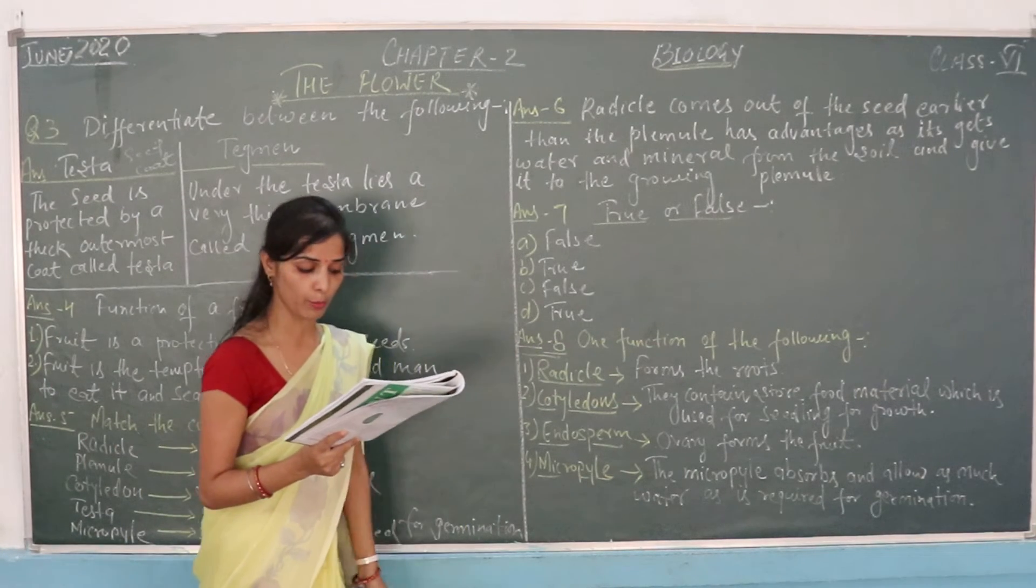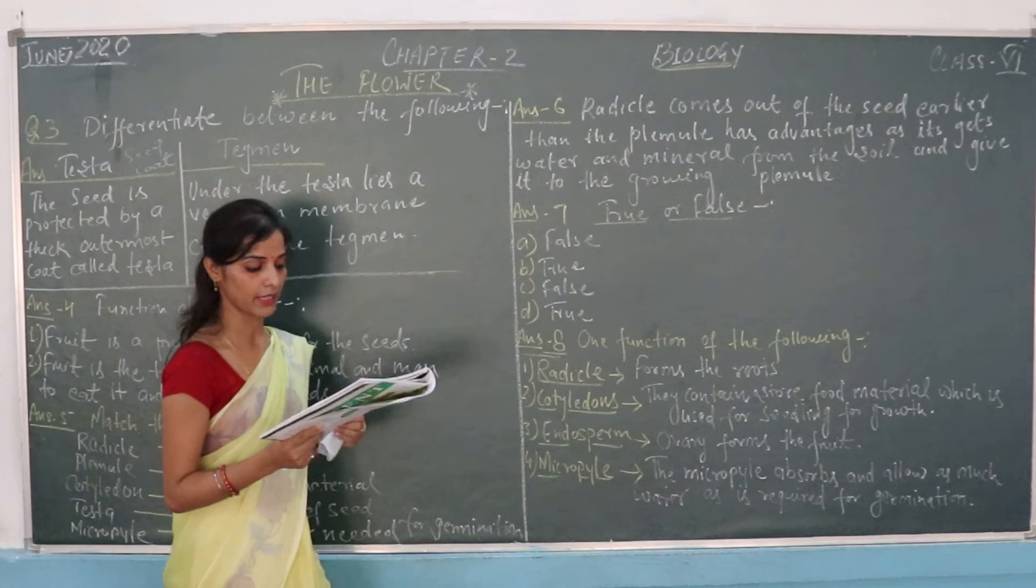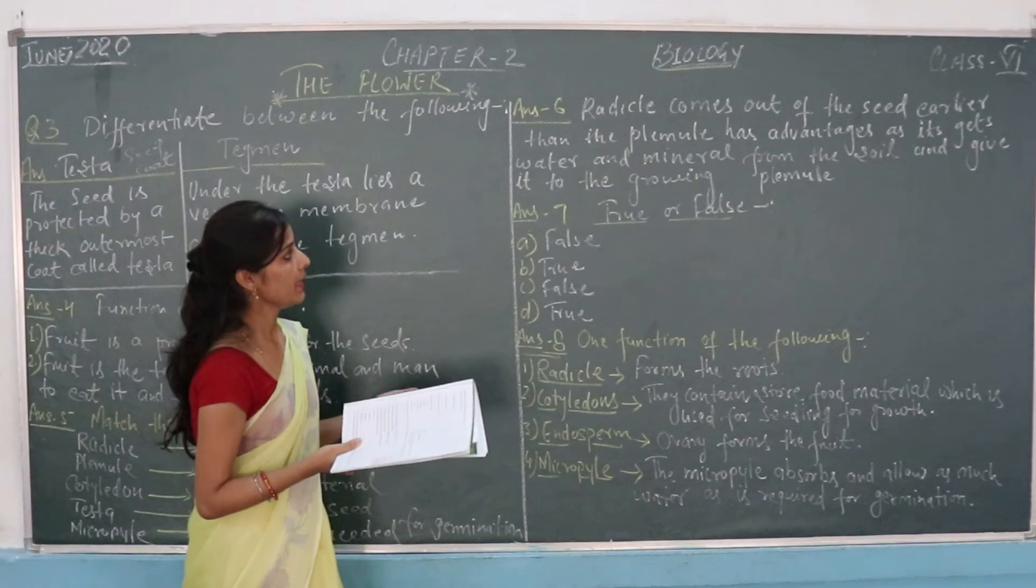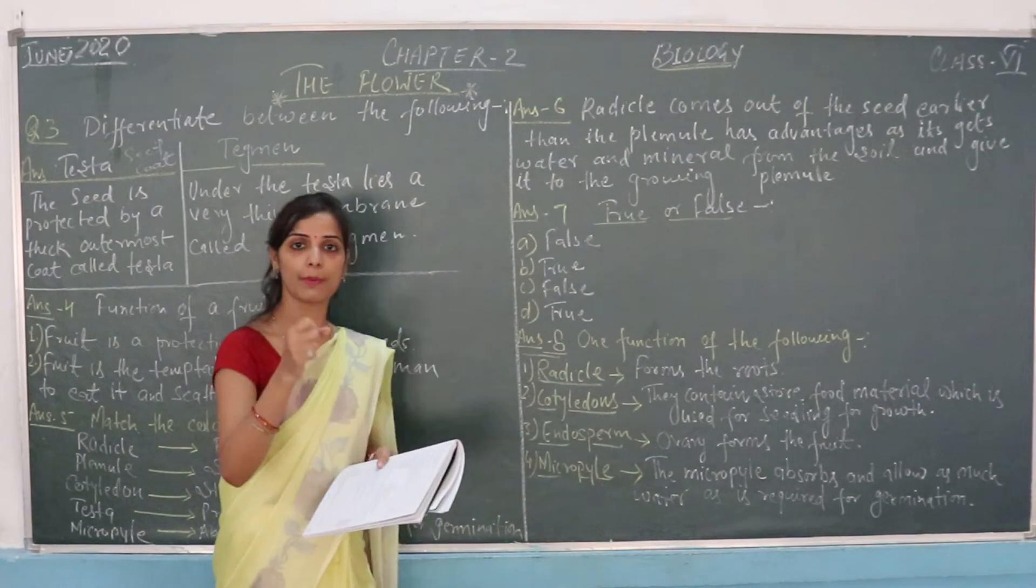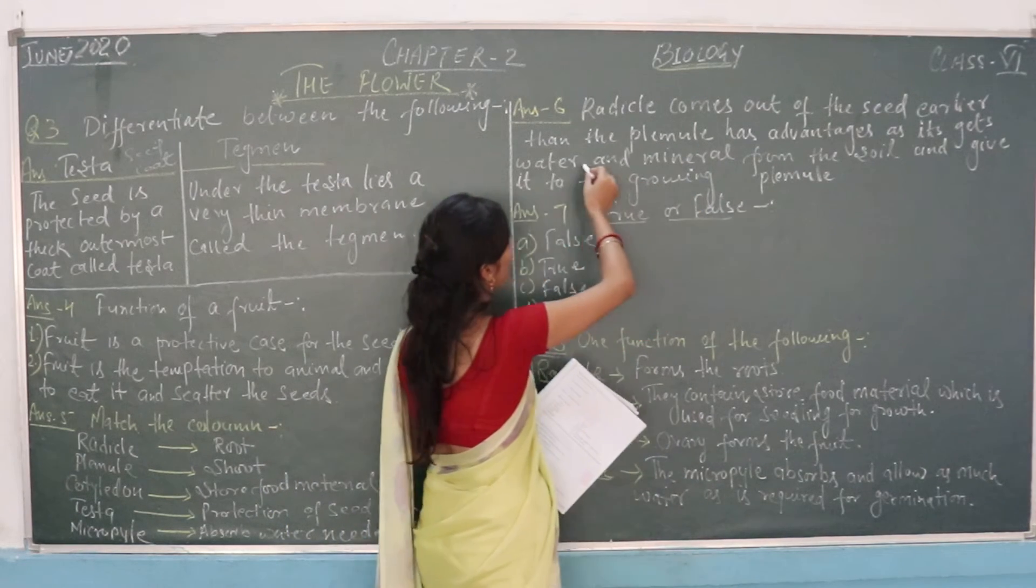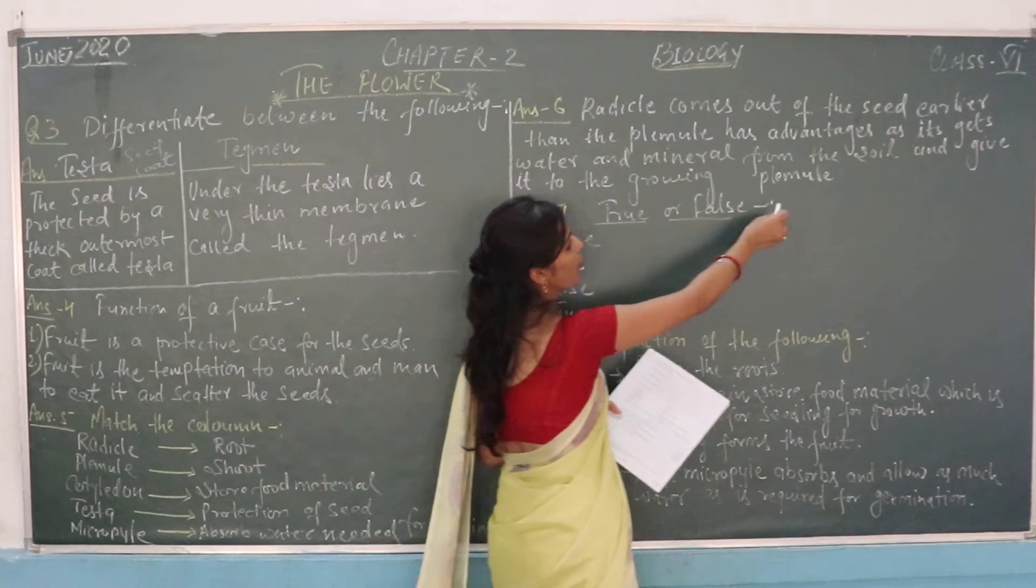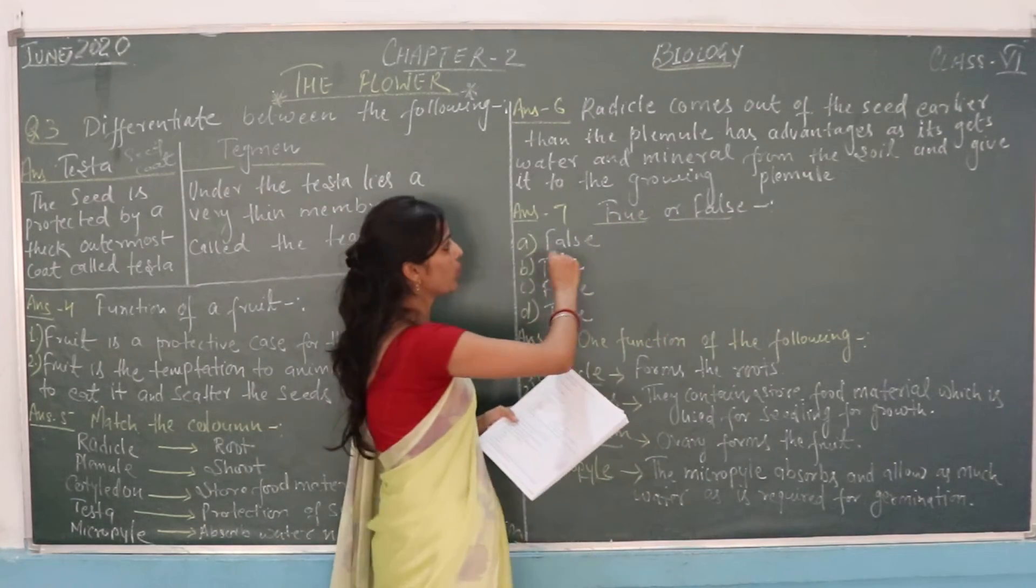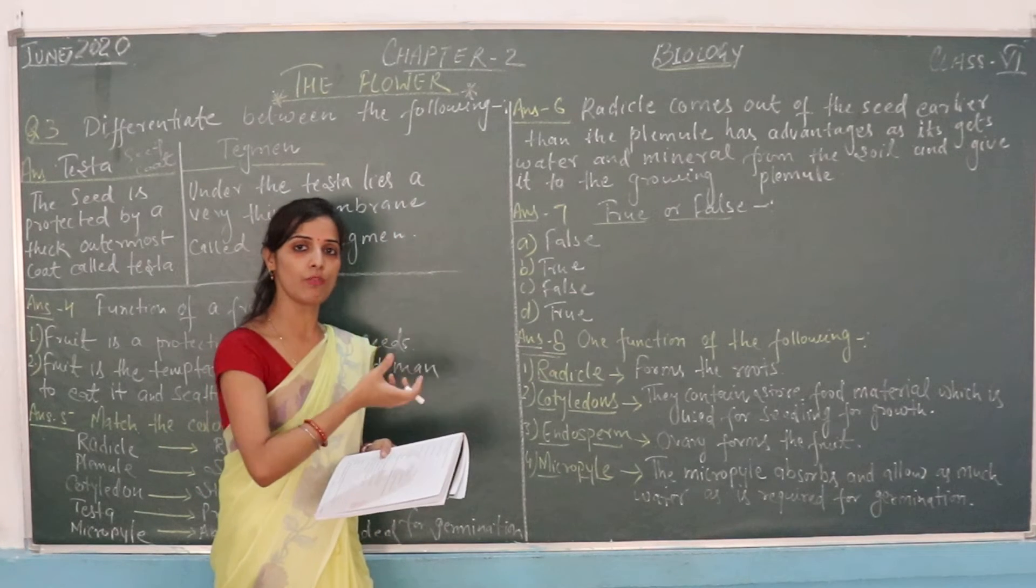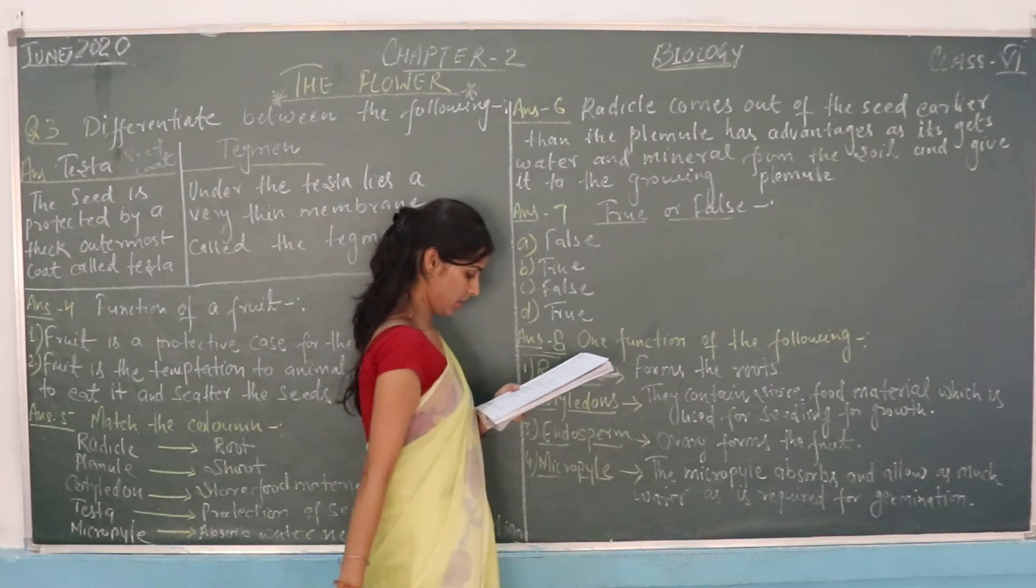Next question: Radical emerges out of the seed earlier than the plumule. State one reason. What is the reason? Radical comes out of the seed earlier than the plumule because it absorbs water and minerals from the soil and sends them to the growing plumule.